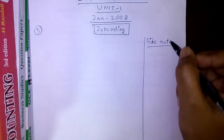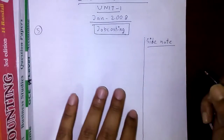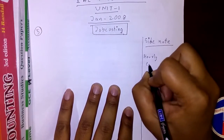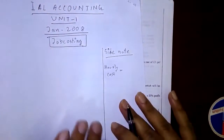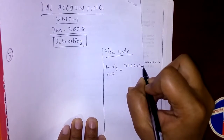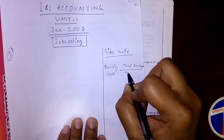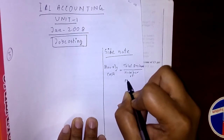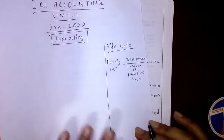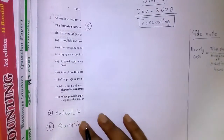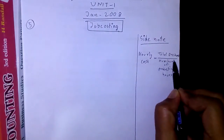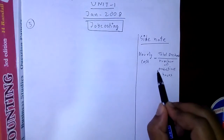Here's a side note to make things easier. The formula is: hourly cost equals total overhead divided by number of productive hours. To find the answer to question 5a — calculate the hourly cost for Ahamed — first we need total overhead, then number of productive hours, then apply this formula.